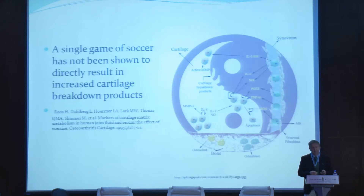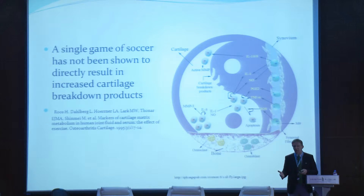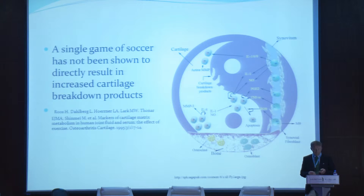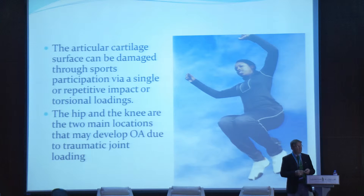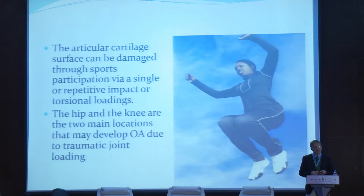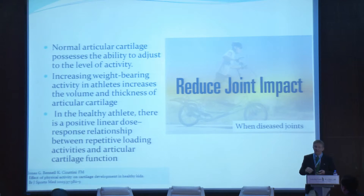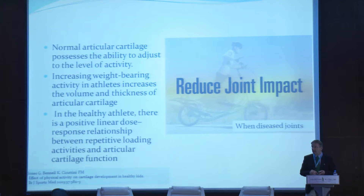Joint injuries are quite common in the athletic population, with 10 to 36% injuries per thousand hours in professional soccer players, and OA develops up to 12 times more frequently than in the general population. After a game, there is no good information — only one study showing that a single game of soccer has not been shown to directly result in increased cartilage breakdown products. The articular cartilage surface can be damaged through sports participation via single or repetitive impact. Normal articular cartilage has the ability to adjust to the level of activity; with increased weight bearing, cartilage becomes thicker, and in the healthy athlete there is a positive linear dose-responsive relationship between repetitive loading and articular cartilage function.